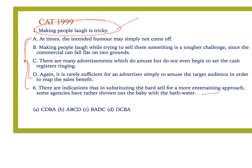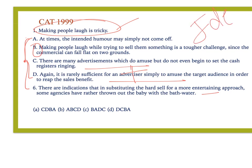Now how shall we go ahead? Look at what's happening here. 'Making people laugh is tricky' — this is the opening of my paragraph. Now what's happening: 'at times the intended humor may simply not come off.' B talks about making people laugh while trying. C talks about there are many advertisements. D says it is rarely sufficient to advertise simply. Now the main subject here is making people laugh, making people happy — that's the reason B becomes my opening sentence. The moment B becomes my opening sentence, D is cancelled, A is cancelled, C is cancelled. What I'm left with is B-A-D-C. Period. I get the answer.